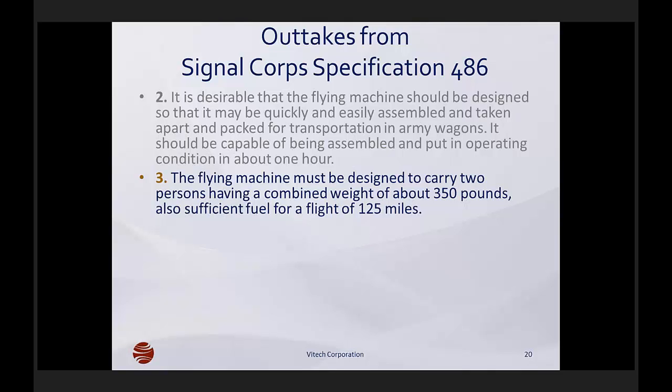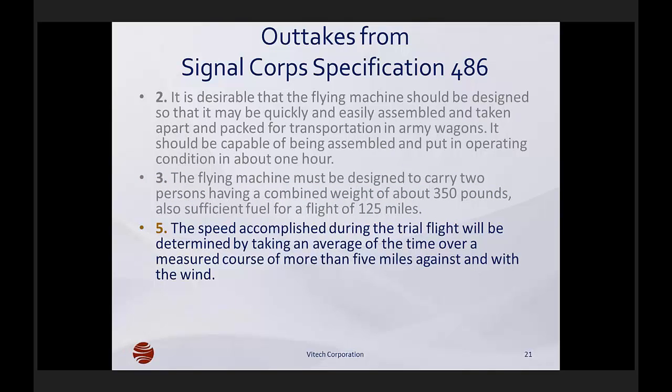The aircraft had to have sufficient fuel to keep it aloft for almost three hours at the astounding speed of 40 miles per hour. Imagine the engineering effort required in 1907 to design a plane with a much larger capacity than current payloads at the time. Requirement 5 identifies a validation requirement — it specifies the way that the measurement would be taken to demonstrate compliance with speed requirements, very common to the types of requirements we get today over 100 years later.